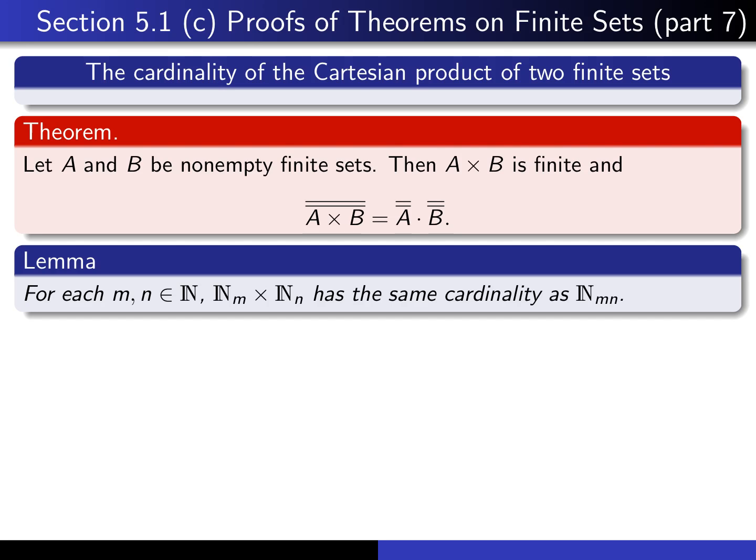The key is to begin by proving a special case of the theorem, namely the case where A and B are specifically Nₘ and Nₙ for some natural numbers m and n. In that case, the theorem says that Nₘ × Nₙ has the same cardinality as Nₘₙ. In other words, the cardinality of it is m times n.